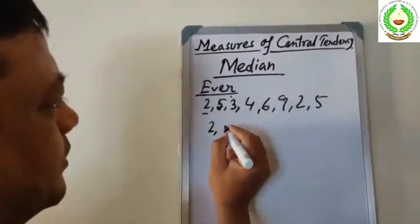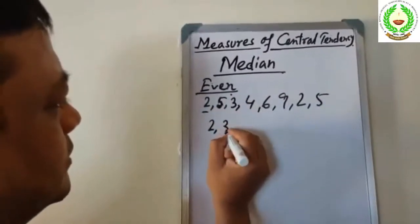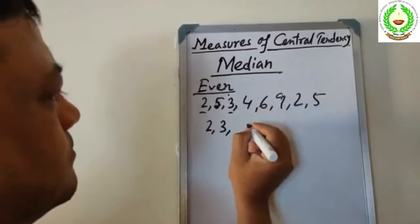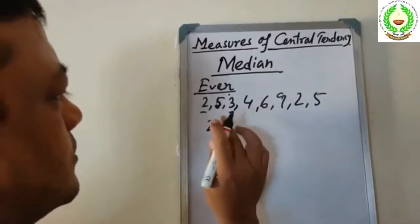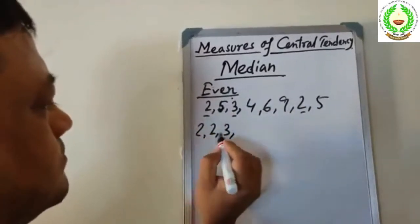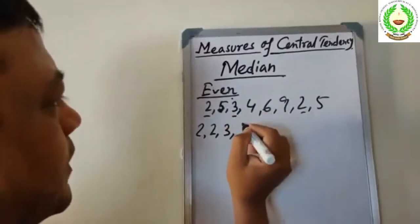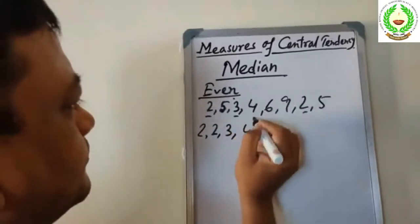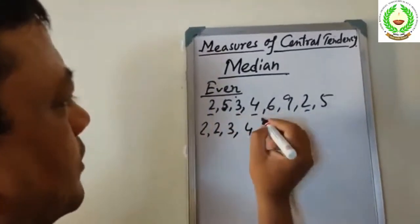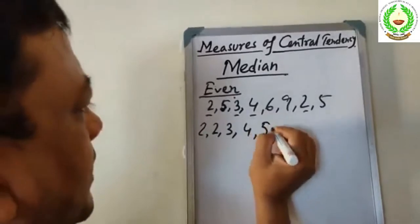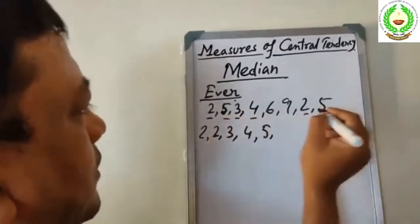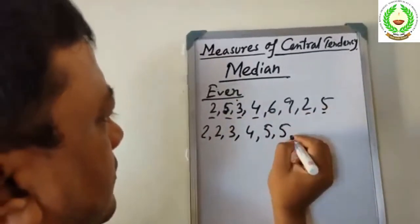Arranging the data in order: 1, 2, 3, 4, 5, 5, 6, 7, 8, 9, 10.